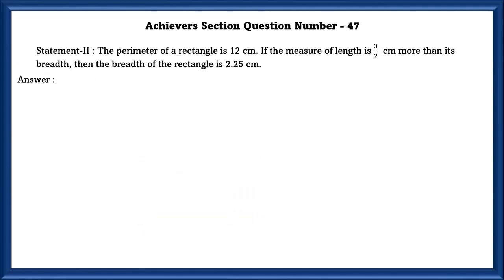Statement 2. The perimeter of the rectangle is 12 centimeter. If the measure of the length is 3 by 2 centimeter more than its breadth, then the breadth of the rectangle is 2.25 centimeter.